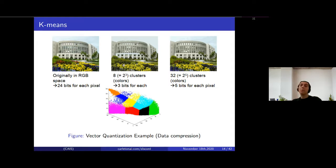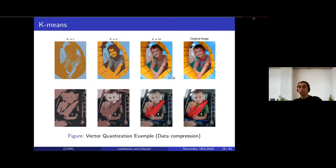The resolution is minimally distorted. If you increase the number of clusters you get a better image. For example, representing each pixel with 5 bits instead of 3 means applying k-means with 32 clusters. With only 2 clusters you can clearly see only two colors, and as you increase the number of clusters the image quality increases. Depending on the application, you choose an appropriate value of K.